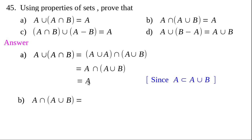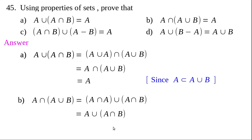Part (b): A∩(A∪B). By the distributive property, A∩(A∪B) = (A∩A)∪(A∩B) = A∪(A∩B). Since A∩B ⊂ A, when we take the union of two sets where one is a subset of the other, the larger set is the result. Therefore A∪(A∩B) = A.